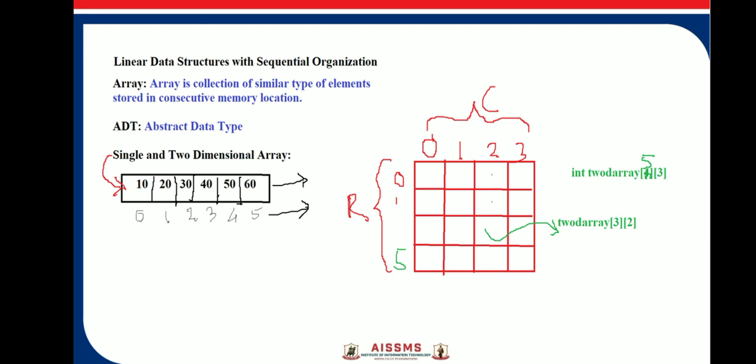We can see that R represents rows and C represents columns. For example, 0, 1, 2, 3 are the rows, and 0, 1, 2, 3, 4, 5 are the columns - row by column.